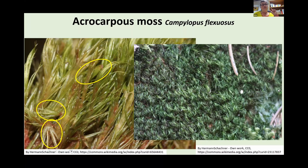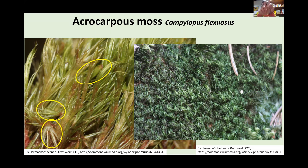We looked at vegetative reproduction in liverworts — the gemmae that drop off and form a new clone plant. Acrocarpous mosses do a similar thing. They sometimes produce gemmae, but for this particular species they produce a more complex vegetative propagule consisting of a tiny bit of stem with a few leaves, which detaches from the main stem. You can see them circled in yellow — they fall off and from that one little piece, a new plant can grow. The genus Campylopus does this quite often.